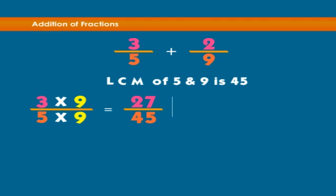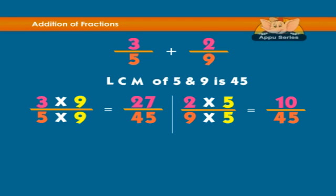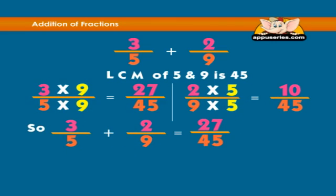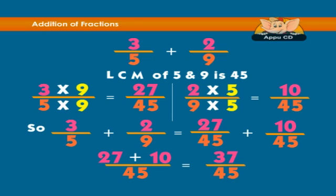And change the second number two-ninths so that it has forty-five as the denominator. Now that we have the same denominators, we can simply add the numerators. Twenty-seven plus ten equals thirty-seven. So, the answer is thirty-seven over forty-five.